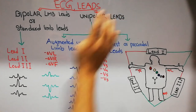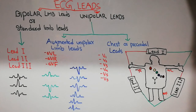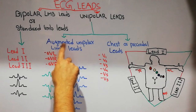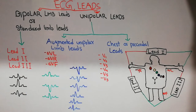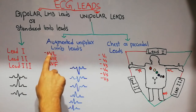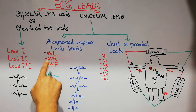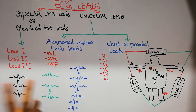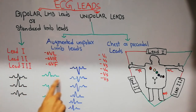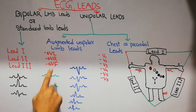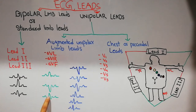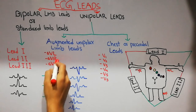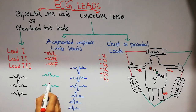The unipolar leads are further classified into two categories. One category is the augmented unipolar limb leads, which include AVL, AVR, and AVF. On the paper strip they look like this — AVL and AVF have a positive deflection, but AVR has a negative deflection.